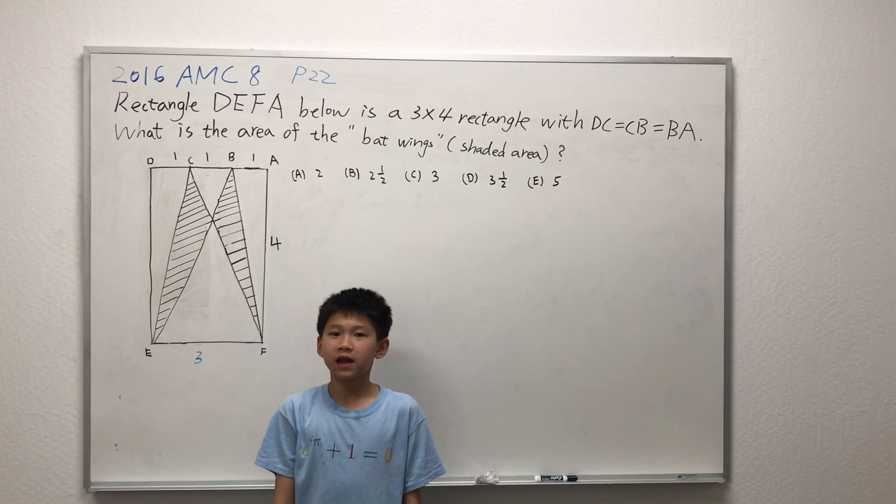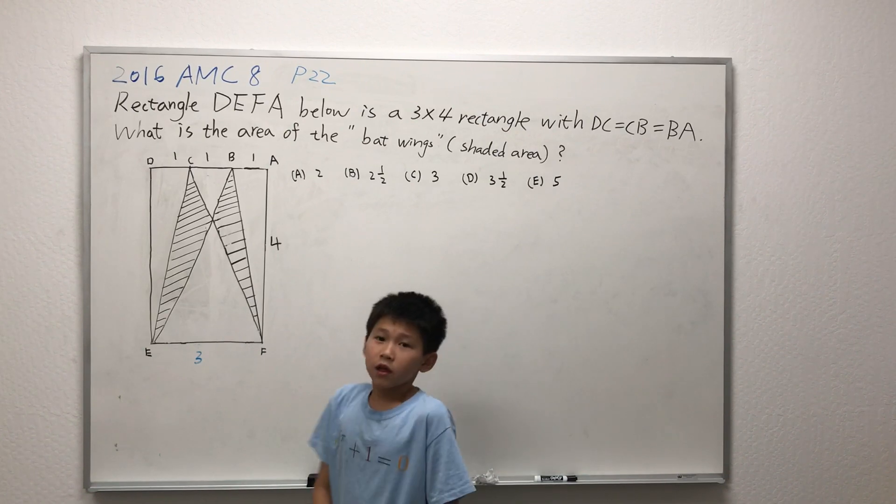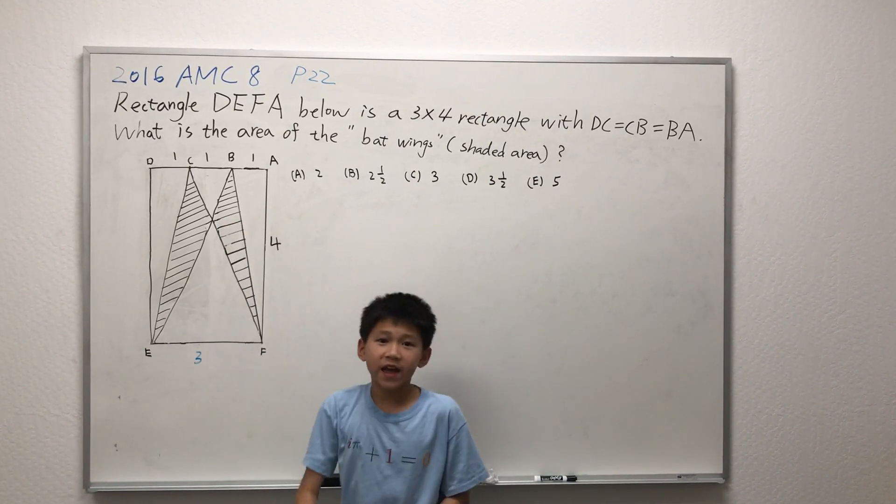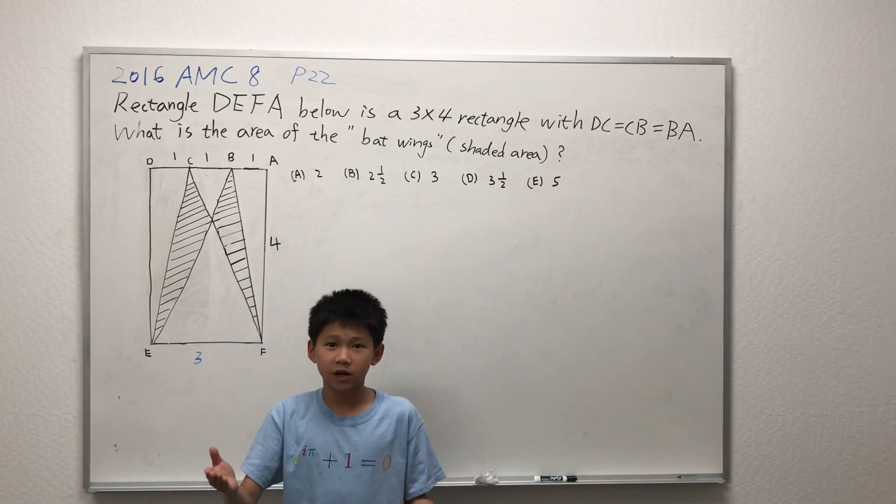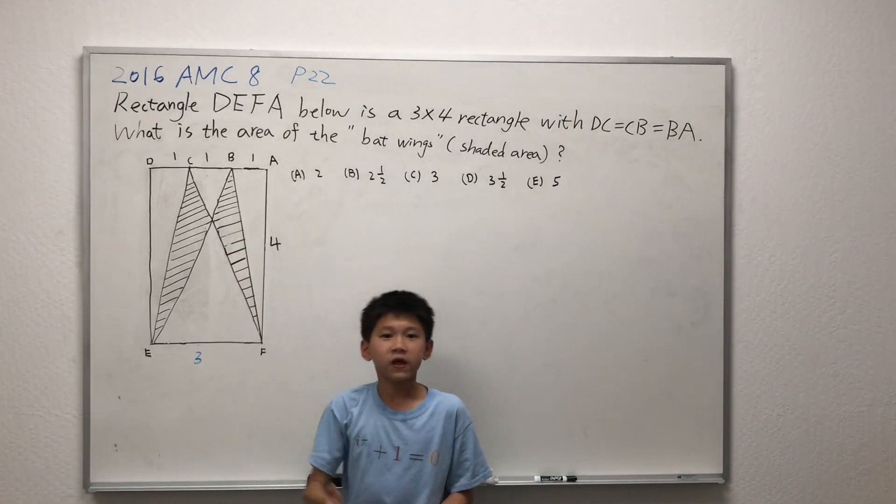The problem is asking us what the area of the bat wings are. The plan of attack for this problem is just to find a bigger area and subtract smaller areas from it to get the wanted area. There are so many different ways you can do it in this kind of problem.